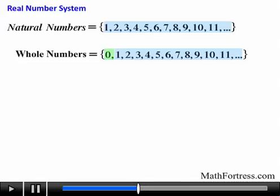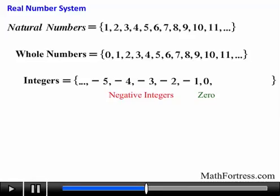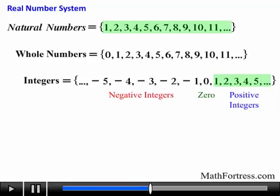The whole numbers alone do not provide all the numbers that are useful in various applications. We also need numbers below 0 and above 0. The set of integers include negative integers, such as negative 5, negative 4, negative 3, negative 2, and negative 1. The number 0 and the positive integers, such as 1, 2, 3, 4, and 5. Note that the natural numbers and the positive integers are the same set of numbers. The integer 0 is neither a positive nor a negative integer, so keep that in mind.